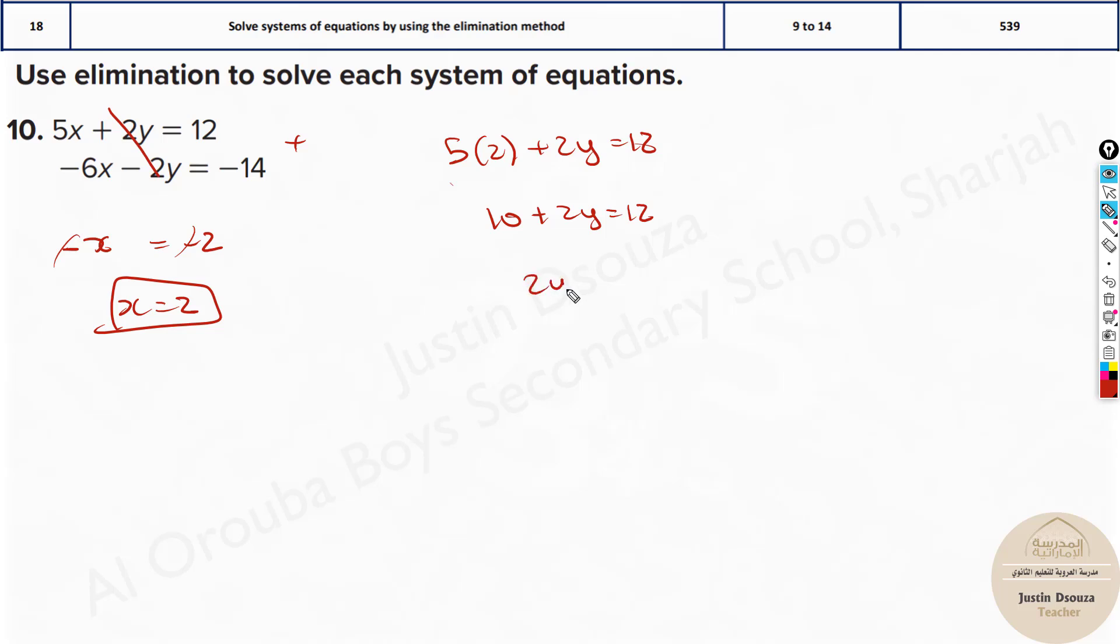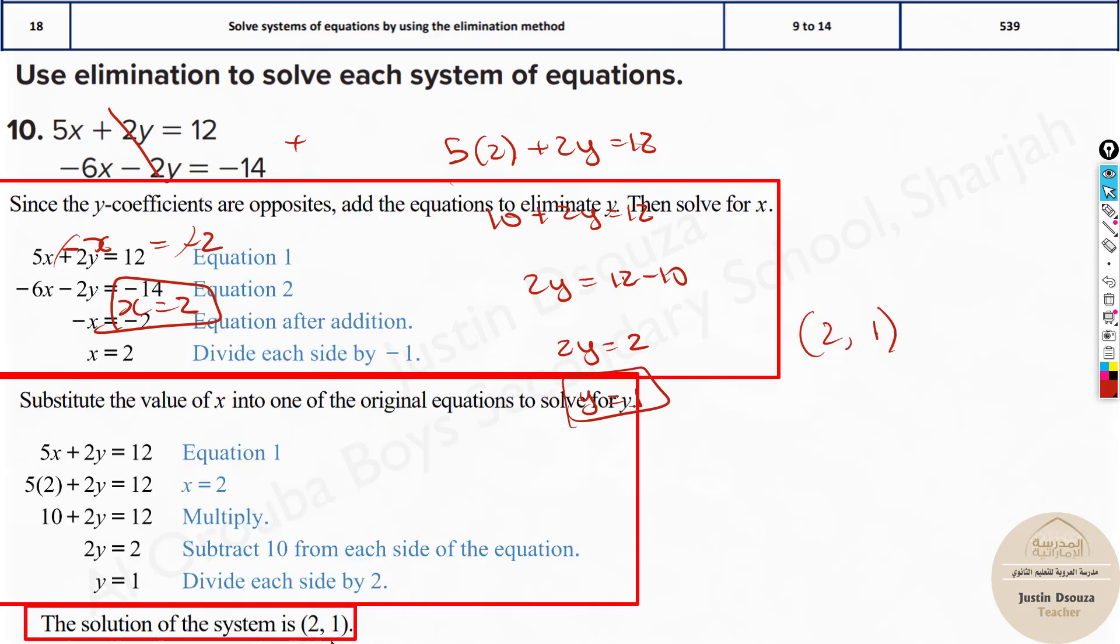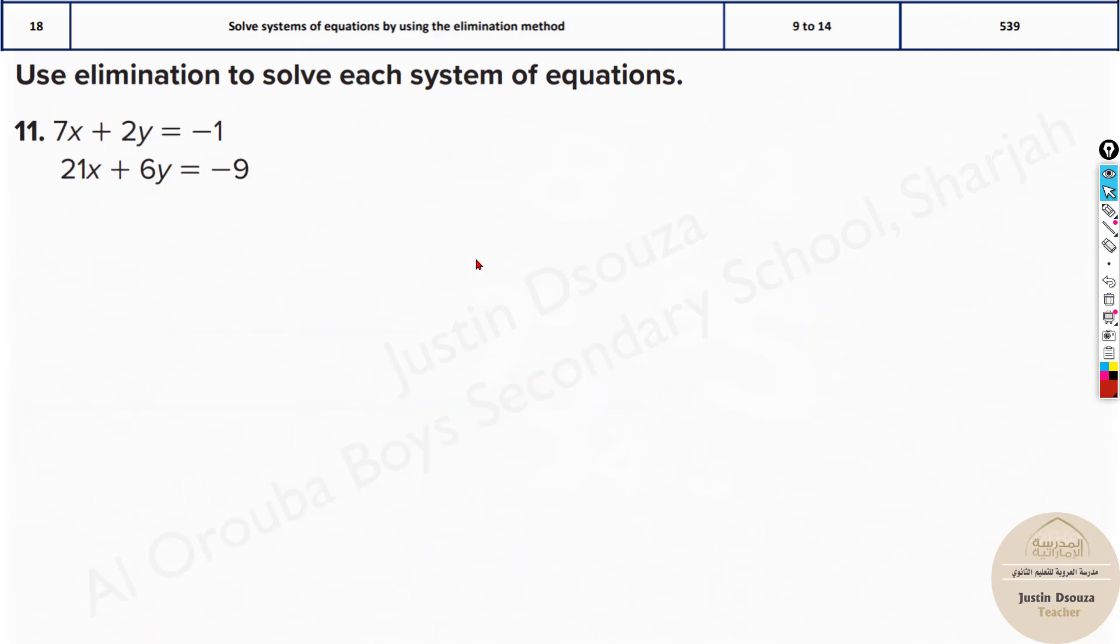Take this to the other side. It will be 2y equals 12 minus 10. 2y equals 2, y equals 1 because dividing both sides by 2. And these are the solution set: 2, 1 is the answer. So this is how we can easily solve it up. 2 and 1 is the answer. Please solve the other problems by yourselves. They are pretty straightforward.